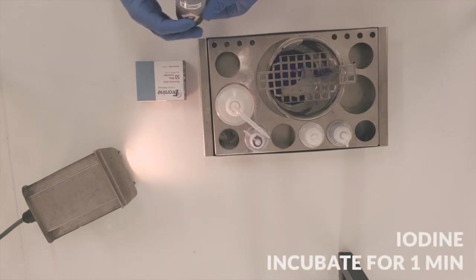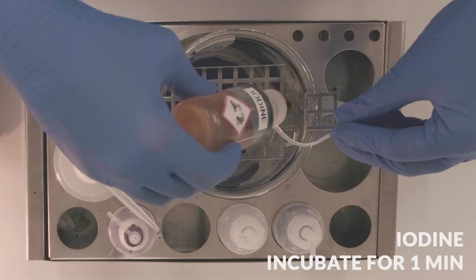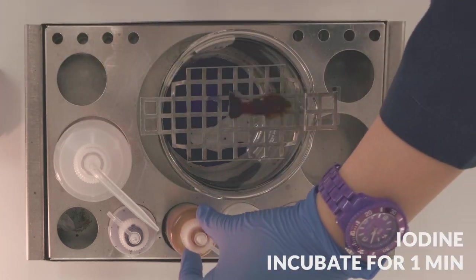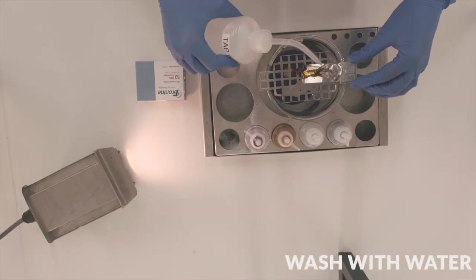Next, we apply iodine and incubate for one minute. This bonds the crystal violet to the peptidoglycan in gram positive bacteria but will not be effective for the thin layer of peptidoglycan found in gram negative bacteria. Wash off any excess iodine with water.